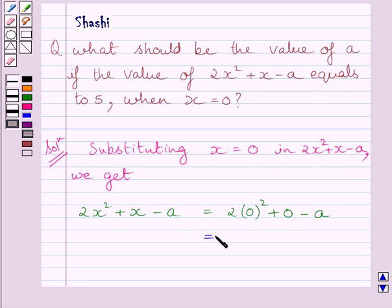Now, 2 multiplied by square of 0 is 0 only. We know 0 square is 0 and 2 multiplied by 0 is 0. Now we will write plus 0 as it is and here we will write minus A. Now, 0 plus 0 is 0 and 0 minus A is equal to minus A only.